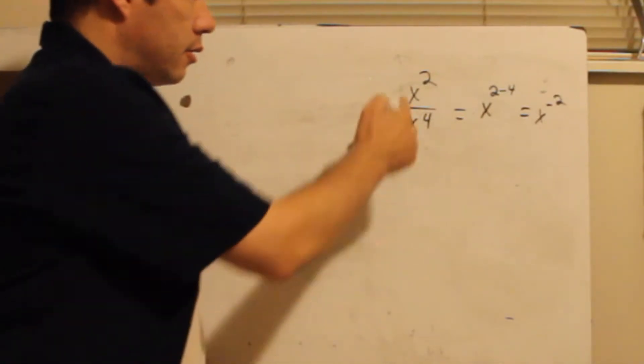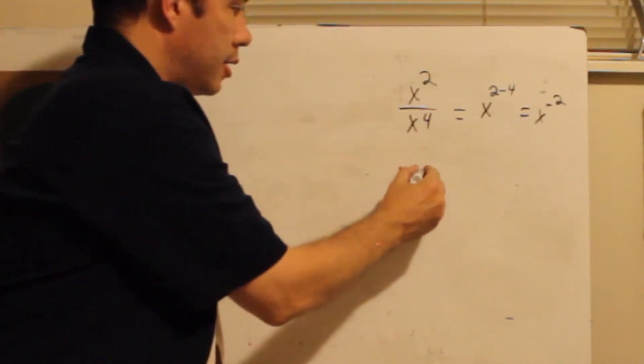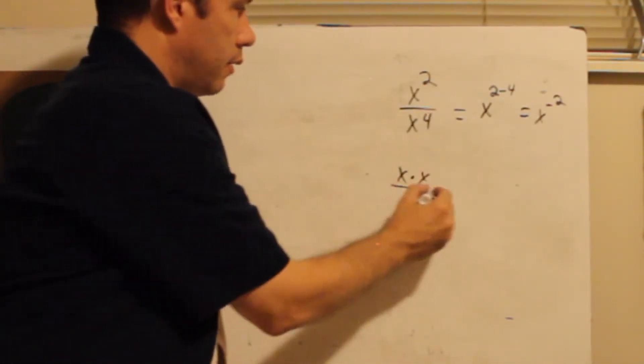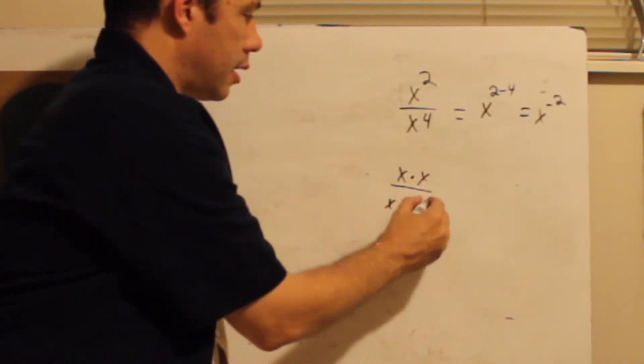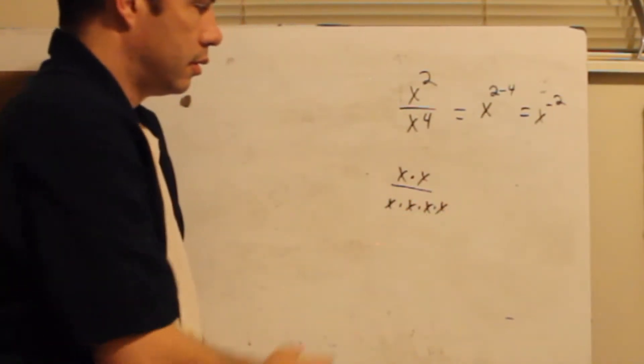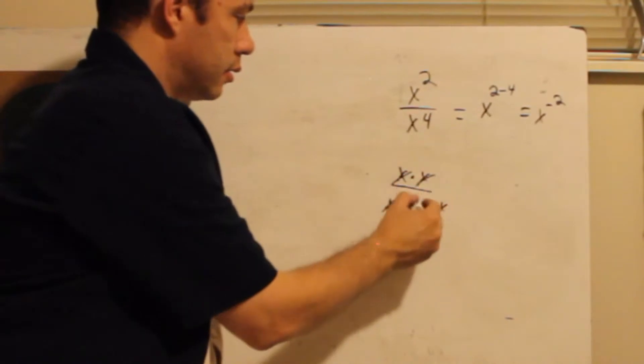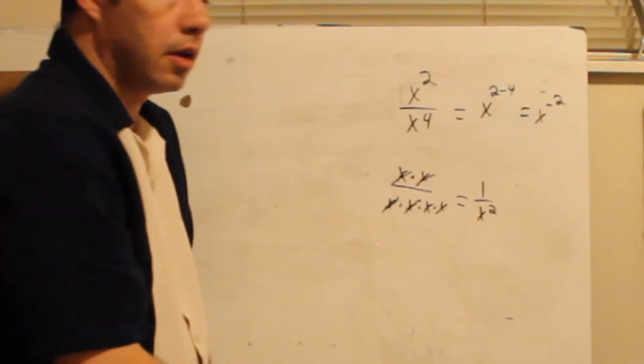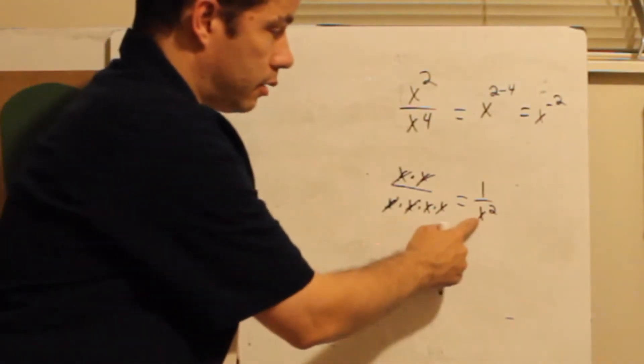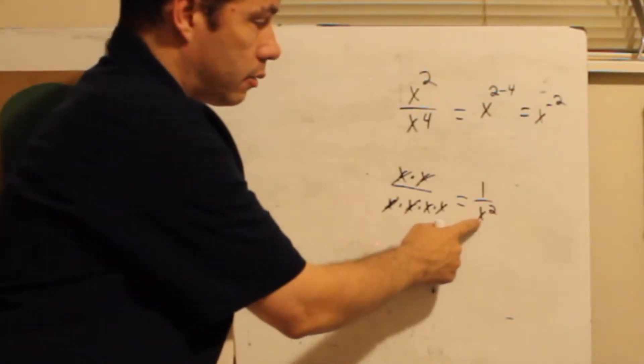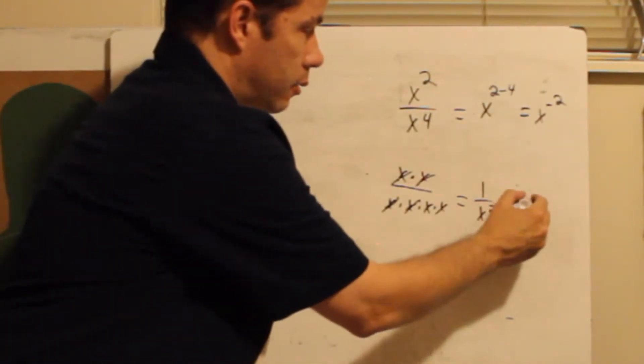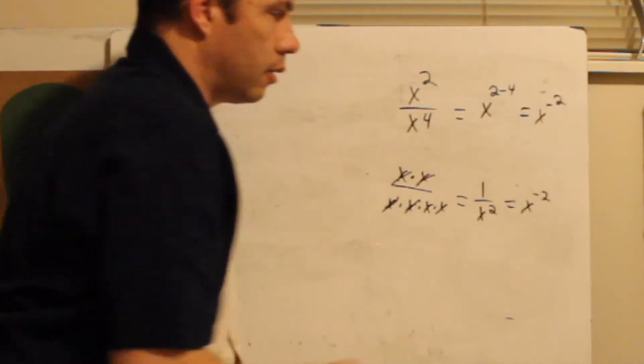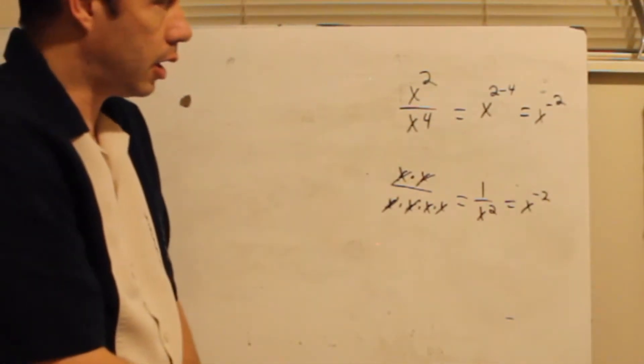If you want to check your answer, you can do this. x times x, x squared, right? Divided by x times x times x times x. Cancels, cancels. What am I left with? 1 over x squared. And yesterday we talked about how x squared on the bottom of a fraction is equal to x to the negative 2. It means division.